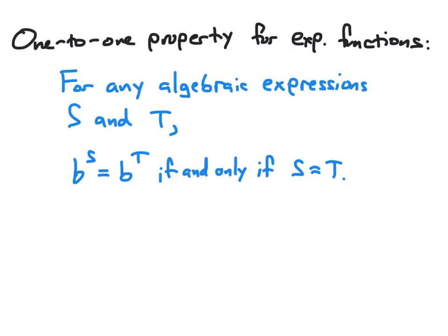Exponential equations in which both sides can be written as expressions with the same base can be solved using the one-to-one property for exponential functions. This states that for any algebraic expressions s and t, b to the s equals b to the t if and only if s equals t. In other words, if we have an equation where some number raised to one power equals that same number raised to another power, those two exponents can be set equal to each other and we can solve that much simpler equation.